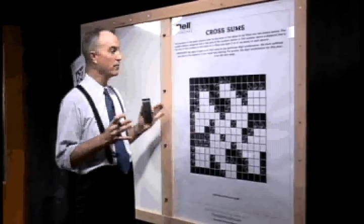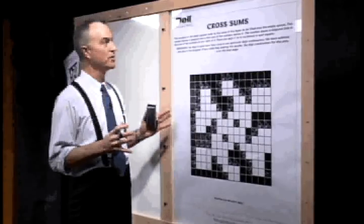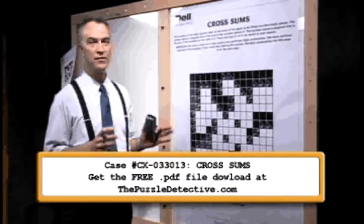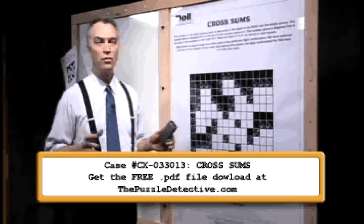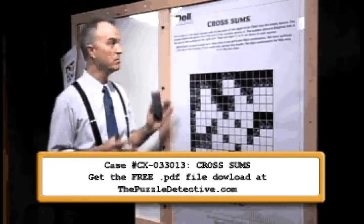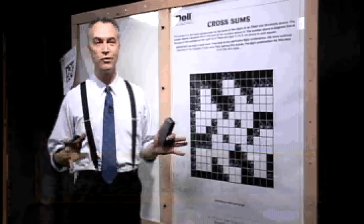This happens to be one of my favorite puzzles. It's called cross sums. For some folks, you may see this grid and go, hey, that's called kakuro. Well, there's two different names that we call it. For our purposes, we call it cross sums.